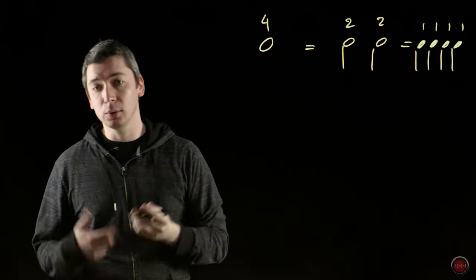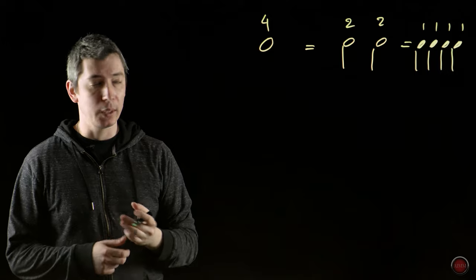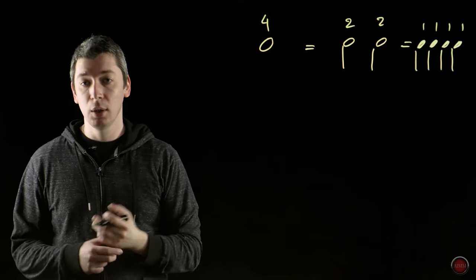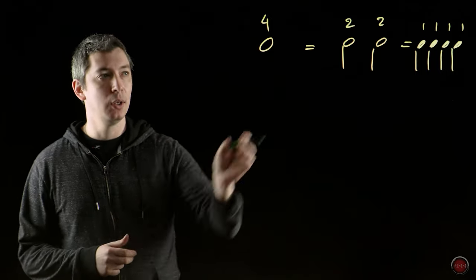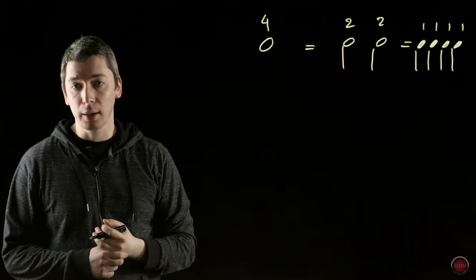Because each quarter note equals to only one beat, right now if I combine all four notes, then it gives me an entire measure of four-four time signature, the measure that a whole note will occupy.